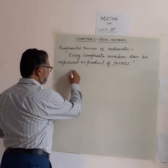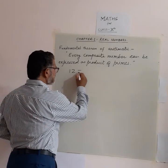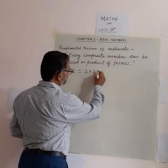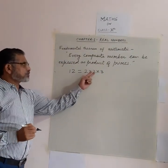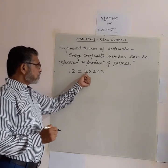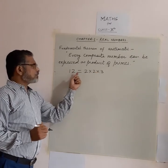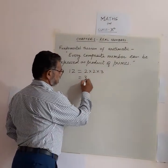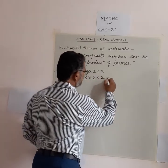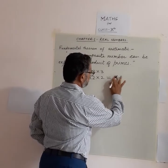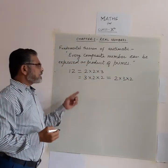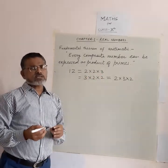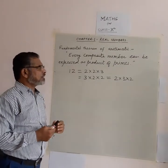Take 12 as a composite number. If we write its prime factors, they are 2, 2, and 3. 2 is a prime number. So this composite number can be expressed as a product of prime numbers. Their order may be changed — you can write 3×2×2, or 2×3×2 — ultimately we get the same three numbers: 2, 2, and 3. This is the Fundamental Theorem of Arithmetic.